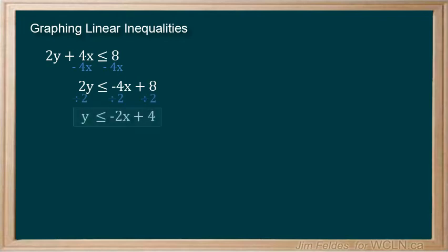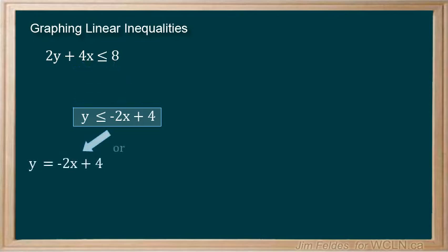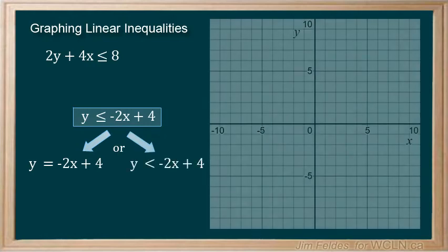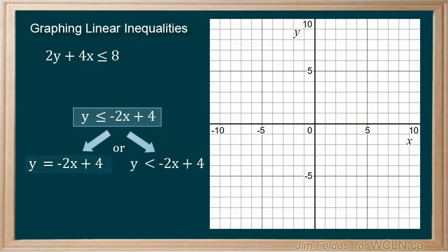We get the linear inequality that really means two things. Y is equal to negative 2x plus 4 or y is less than negative 2x plus 4. To establish our boundary line, view it as an equation.